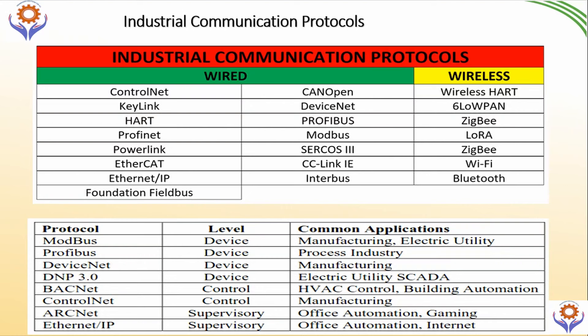Looking at standard protocols by application: Modbus is mainly designed for manufacturing and electrical utilities. Profibus is designed for process industries. DeviceNet is mainly designed for manufacturing industries. DNP3 is utilized for electric utilities and SCADA systems. BACnet is used for HVAC controls and building automation. ControlNet is used for manufacturing facilities. ARCnet is used for office automation, gaming, etc. Ethernet IP is used for office automation and internet purposes. But now all these communications have become very easy to interconnect with each other.